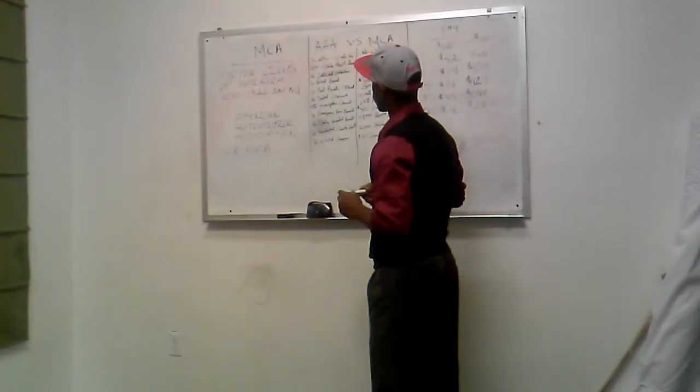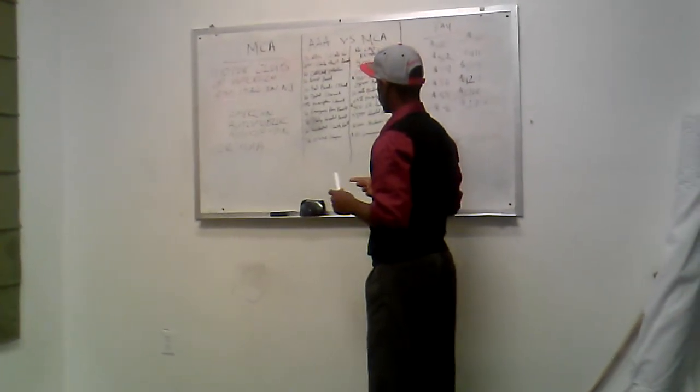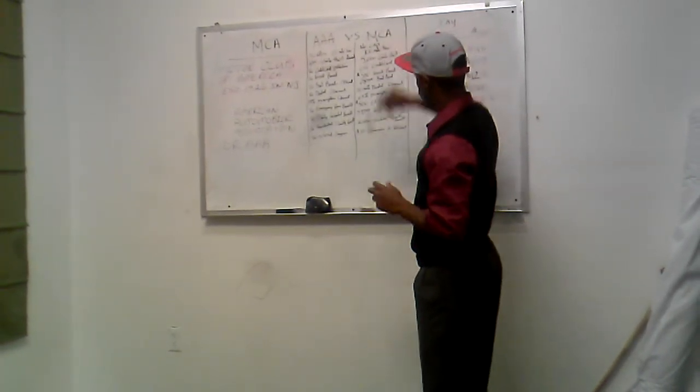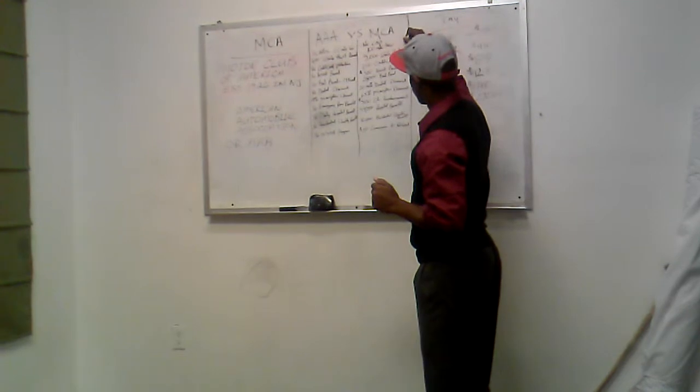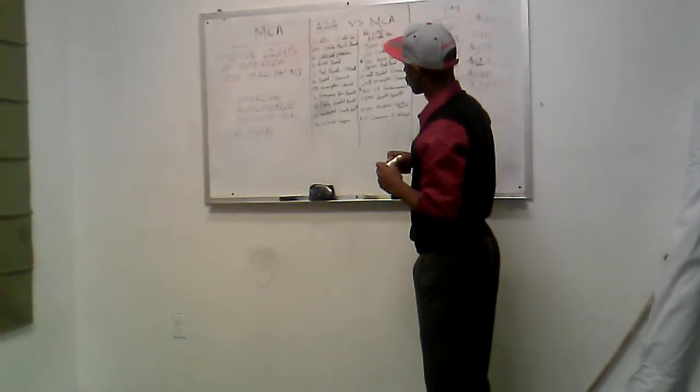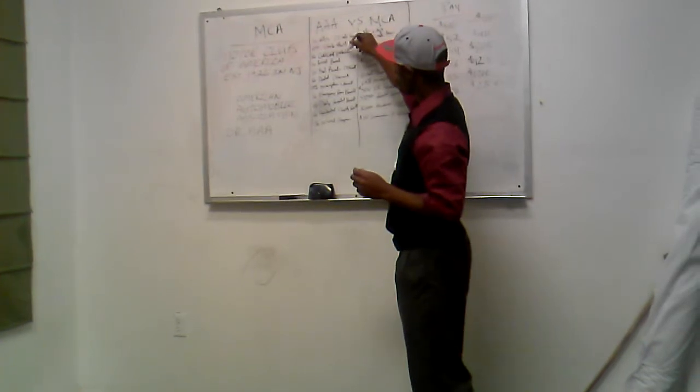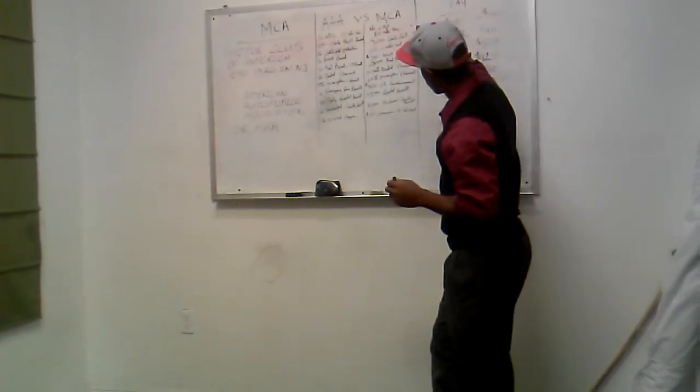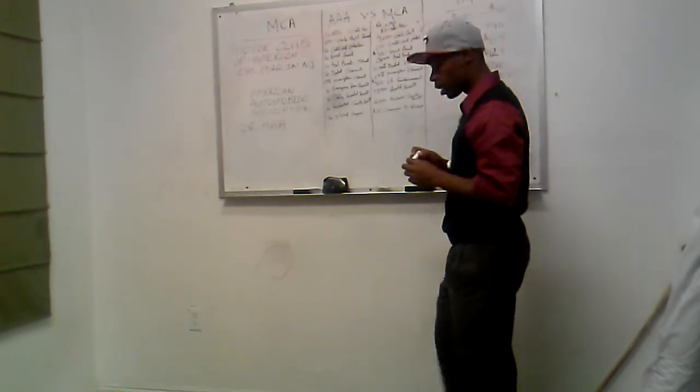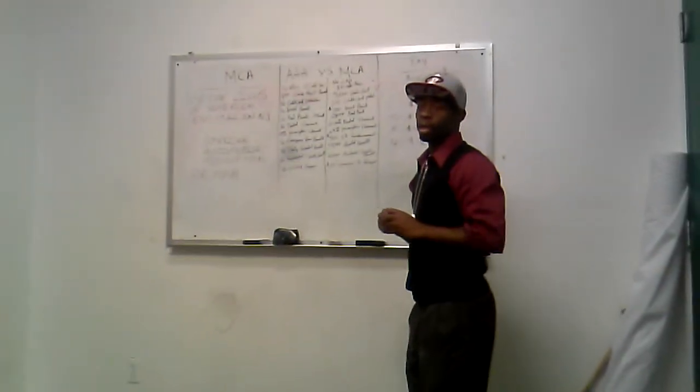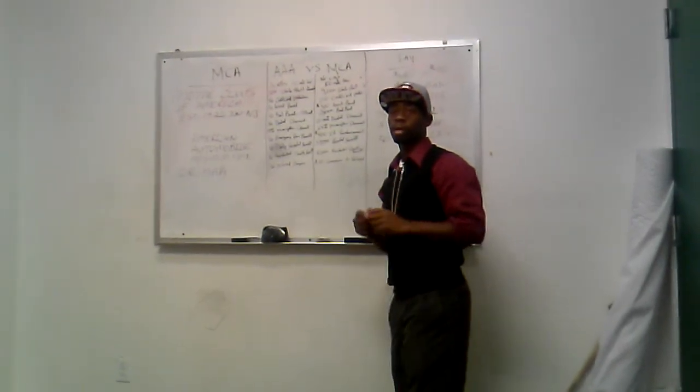Secondly, AAA has a $2,000 vehicle theft reward. MCA has a $5,000 vehicle theft reward. No credit card protection on AAA. There's $1,000 credit card protection with MCA. So if somebody steals your card and runs it up, MCA will give you back up to $1,000 in reimbursement.